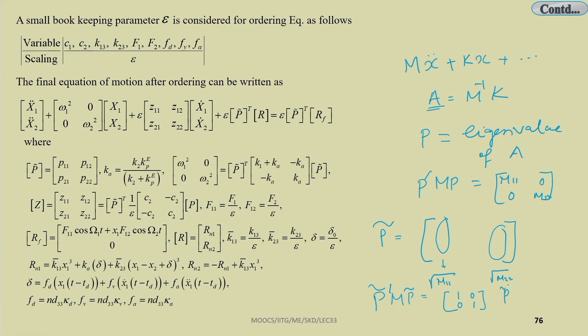Similarly, P̃^T·K·P̃ gives the eigenvalue matrix [λ₁ 0; 0 λ₂] = [ω₁² 0; 0 ω₂²]. Using this weighted modal matrix you can derive the ordered equation. You can also use Rayleigh damping, where damping C = αM + βK, multiply by the weighted modal matrix to find the decoupled equations.